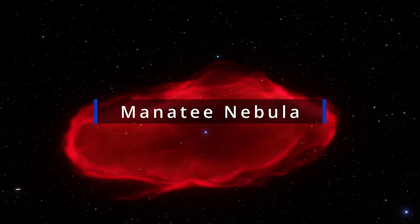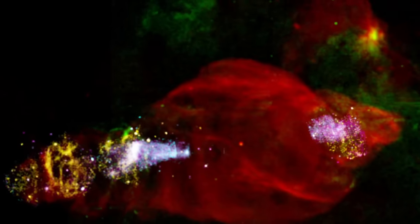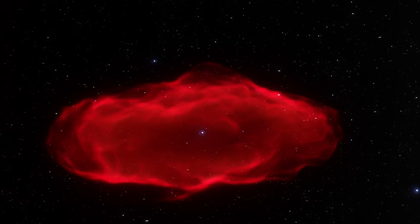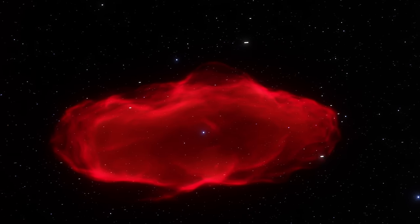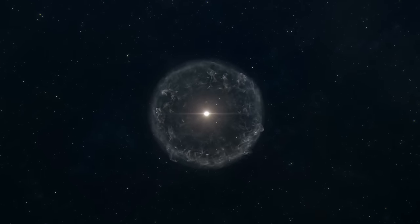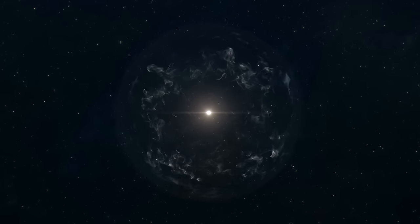And this is known as the Manatee Nebula, although more officially known as W-50 or Westerhout-50. A beautiful nebula approximately 18,000 light years away from us that was very likely produced when a star-wind supernova turned into a black hole and left behind this beautiful remnant.